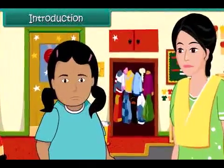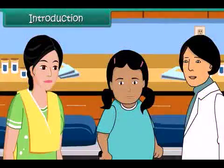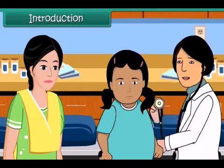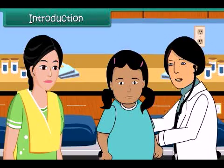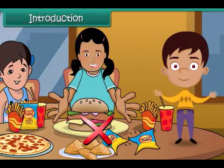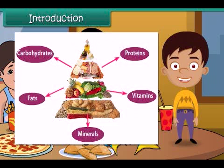Meeta is growing obese and her mother is worried. She takes Meeta to a doctor, who examines her and advises her to stop eating junk food such as burgers, pizzas, and samosas. The doctor asks her to start eating a balanced diet rich in proteins, vitamins and minerals. In this lesson you will learn about different types of food and their importance.